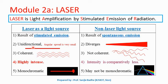Laser light is unidirectional — it travels in a single direction — whereas ordinary light diverges and spreads. Laser light is coherent, so phase relationship is maintained between the light waves in the laser beam. Ordinary light is non-coherent, so the phase relationship is not maintained. Laser light is highly intense. As the laser beam is very narrow and travels in a single direction, the density of photons is very high and that is why laser beam is highly intense. Ordinary light spreads in all directions, so the density of photons is comparatively less and intensity is comparatively less. Laser light is always monochromatic, whereas non-laser light may not always be monochromatic.